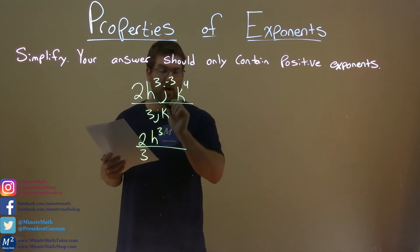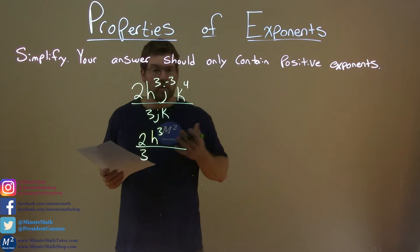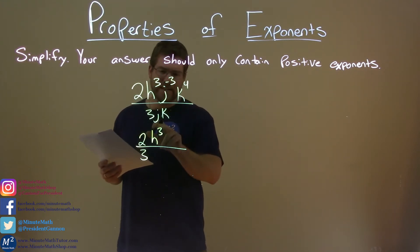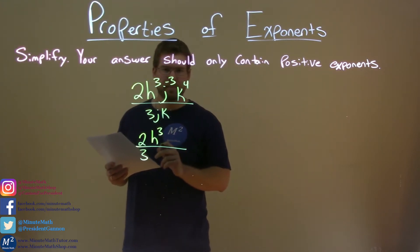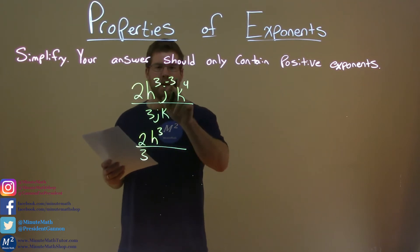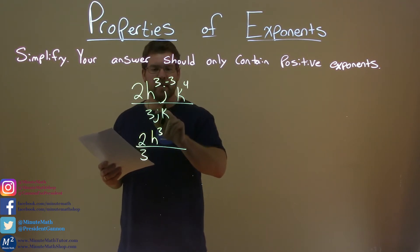Now the j's are next. What are we going to do with these bad boys? We got j to the negative third over j in the denominator. How do we simplify that? Well, negative 3, and this is the first power. We subtract that, right?